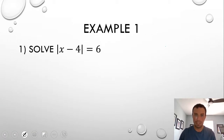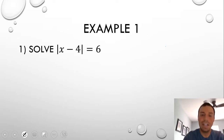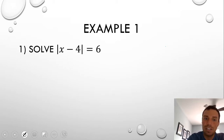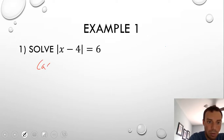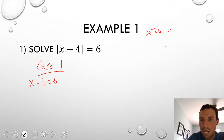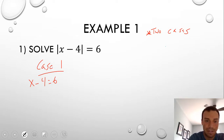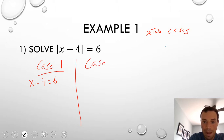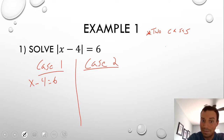Let's take a look at example number one, where we have the absolute value of x minus 4 is equal to 6. When solving an absolute value equation, you separate this into two specific cases. I always write case 1 and case 2. Case 1 looks exactly as it's written without the absolute value signs: x minus 4 equals 6. Case 2: the right side becomes negative.